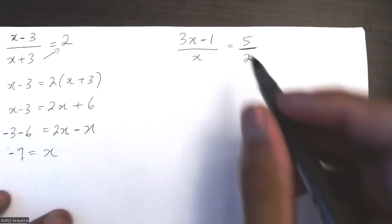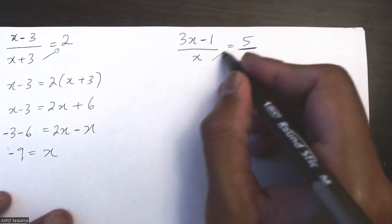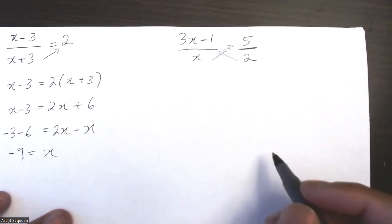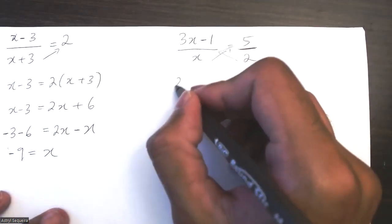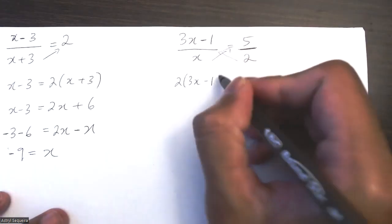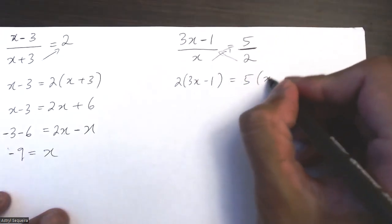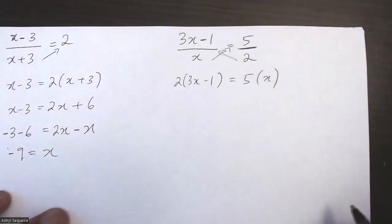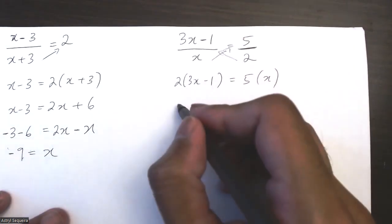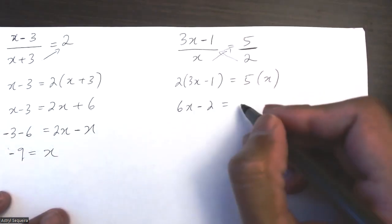Let's do the same with the second one. I'm going to start with cross multiplying, but now I have a denominator on both sides, so I have 2 times (3x - 1) equals 5 times x. Multiplying out gives 6x minus 2 equals 5x.